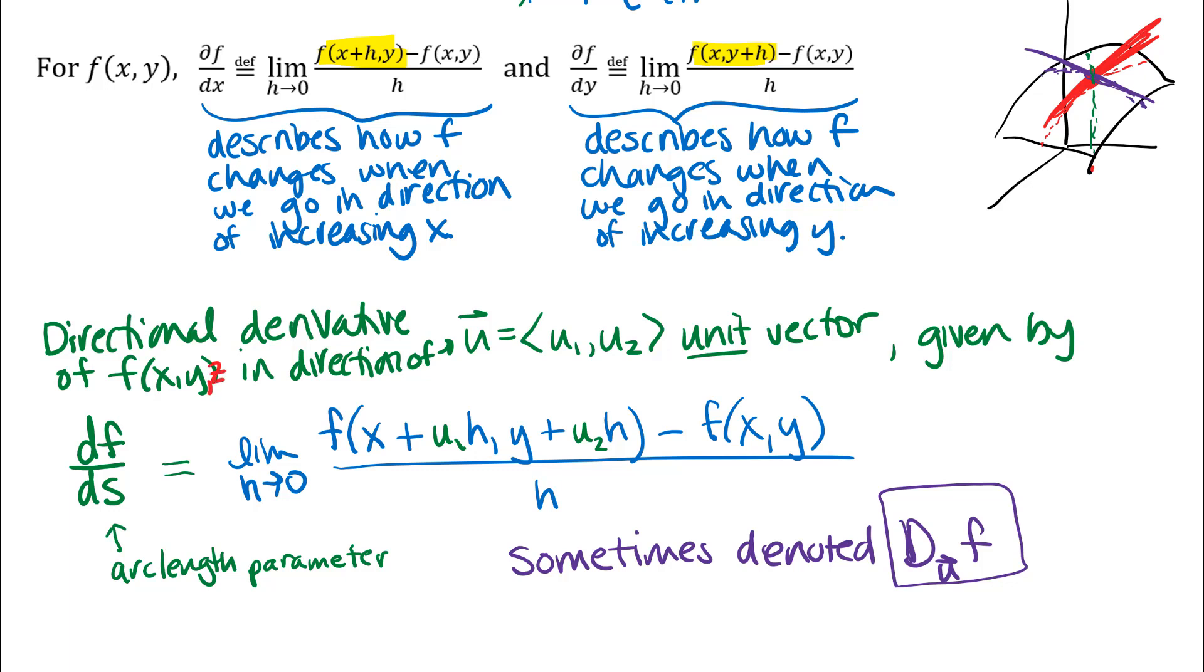So I'm just going to squeeze a z in here. Then I would need a unit vector in R³. So I'd have a u₁, u₂, u₃. And then my definition would be exactly the same as I have here. I would just have a z here inside the function. So z plus u₃ times h inside there. And then minus f of x, y, z. So this definition can be extended to however many variables you have.